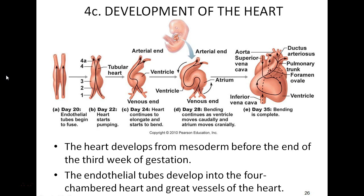A bypass circuit is also present in the fetal heart. The foramen ovale allows blood to bypass the lungs in fetal life because the fetus obtains its oxygen from the umbilical cord instead. Upon birth, that opening occludes and becomes a fossa — the fossa ovalis.